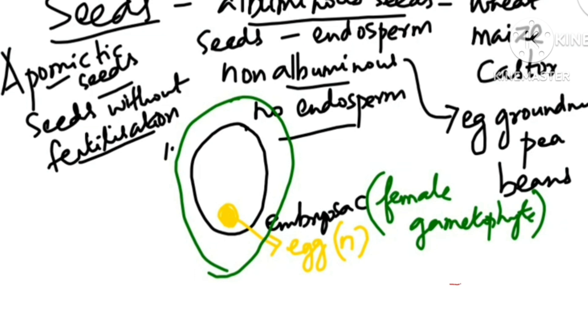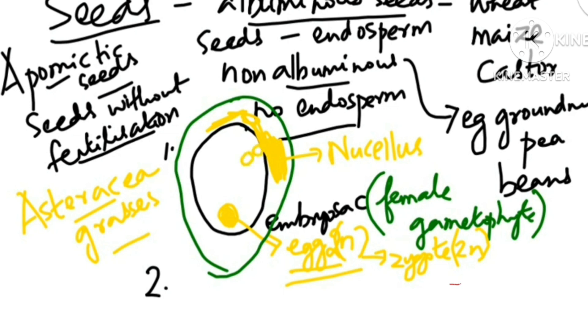It is because of a genetic character. Some of the nucellar cells will start entering into the embryo sac, and you know nucellus is already diploid. If it starts entering into the embryo sac, then each one will become an embryo.